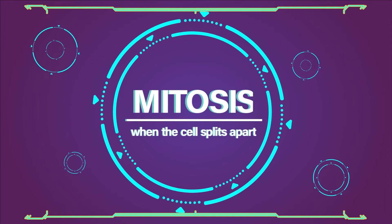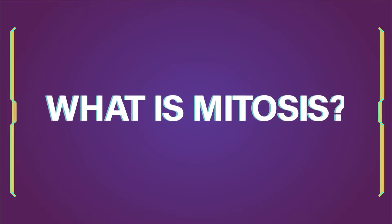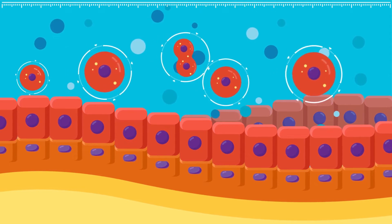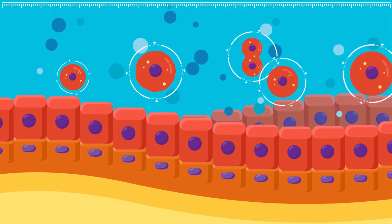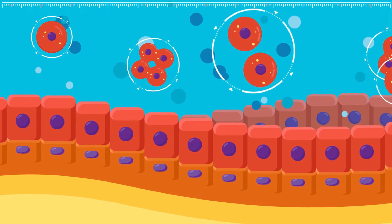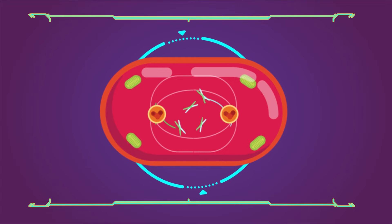Mitosis: when the cell splits apart. What is mitosis? Eventually cells need to duplicate. There are two main methods of replication: mitosis and meiosis. This tutorial will talk about mitosis. The big idea to remember is that mitosis is the simple duplication of a cell and all its parts.